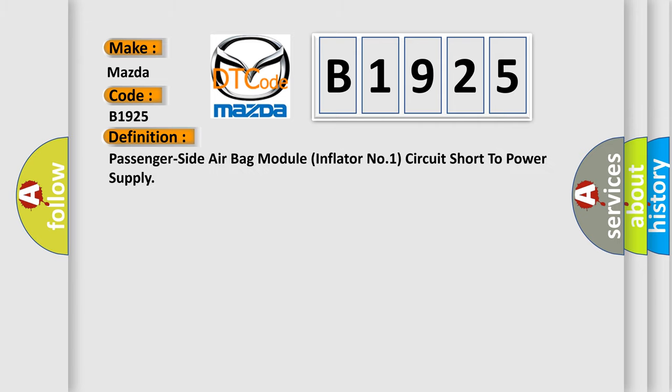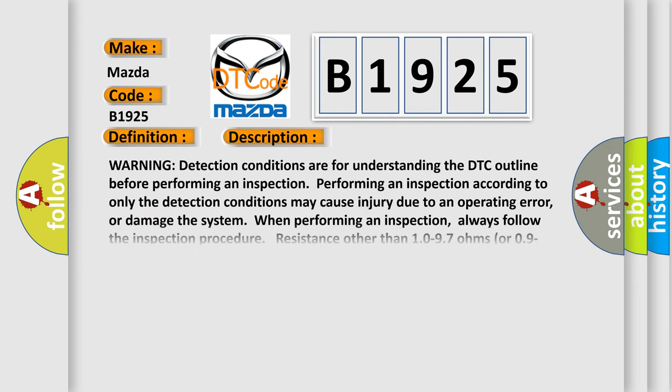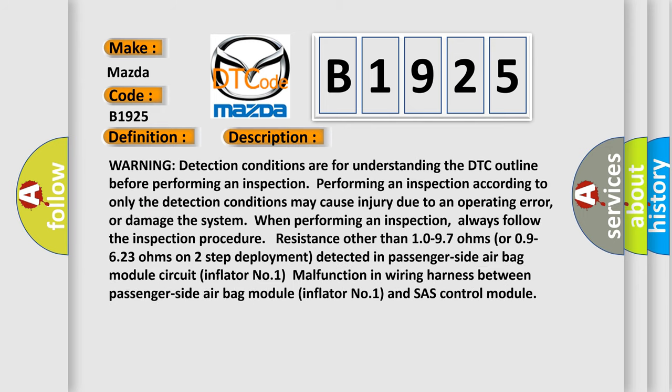The basic definition is: Passenger side airbag module inflator number one circuit short to power supply. And now this is a short description of this DTC code.